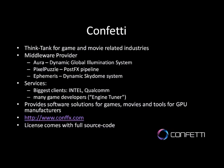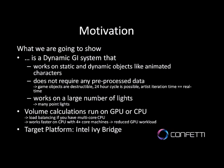Let's talk about the motivation for dynamic global illumination. What we are going to show today is a dynamic GI system that works on static and dynamic objects like animated characters. It does not require any pre-processed data - this was especially important for us. When I worked for Rockstar, open world games usually don't work really well with pre-processed data, so you want to generate everything on the fly. It's also easier to do a 24-hour cycle if the sun is constantly moving, and artist iteration time is shorter when you can do everything in real time.